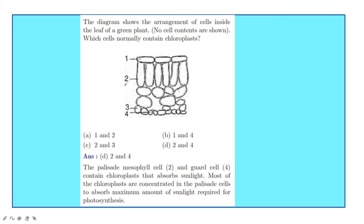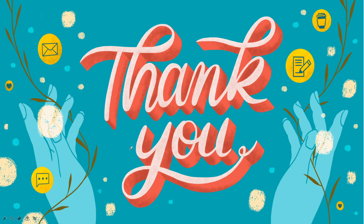The answer is the palisade mesophyll cells and guard cells, which contain chloroplasts that absorb sunlight. Most chloroplasts are concentrated in the palisade cells and absorb the maximum amount of sunlight required for photosynthesis. With pictures, multiple choice questions may also be asked, so be ready with all types of MCQs.